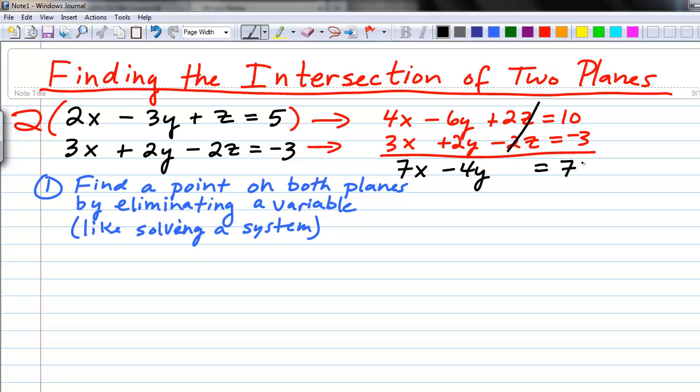Our second step, usually part of the first step here, is we're going to solve the resulting equation for one of the variables. When we multiply the first equation by 2, we get 4x minus 6y plus 2z equals 10. Rewriting the bottom one, we get 3x plus 2y minus 2z equals negative 3. Adding these together, we see that the z's cancel and we end up with 7x minus 4y equals 7.